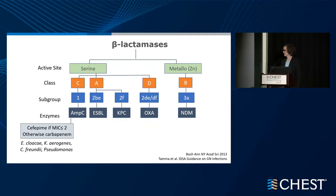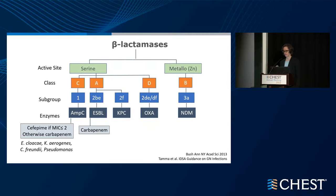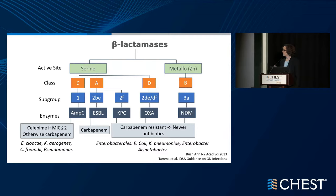If the cefepime MIC is less than two, cefepime is an acceptable alternative; otherwise a carbapenem would be indicated. AMP-C is commonly seen in the organisms listed. Extended-spectrum beta-lactamases are also highly resistant, with the proxy being a ceftriaxone MIC greater than two. In our case patient with ceftriaxone MIC greater than two, even though it appeared sensitive to cefepime, cefepime would not be recommended — a carbapenem would be indicated, as ESBL is likely present. However, for Klebsiella pneumoniae carbapenemases, oxacillinases, and New Delhi metallo-beta-lactamases, these generate carbapenem resistance, indicating consideration of newer antibiotics.